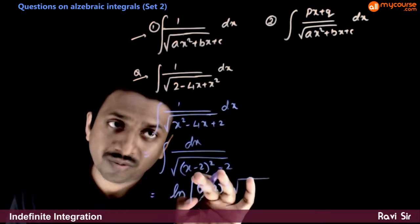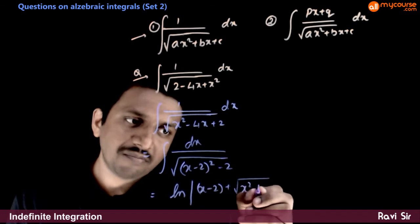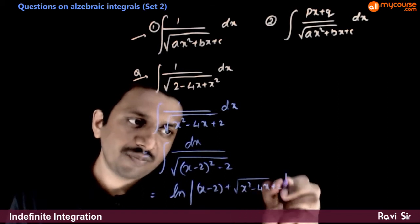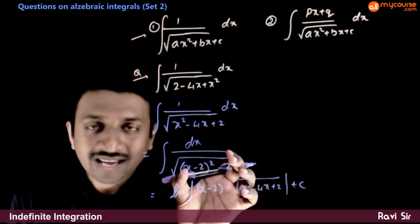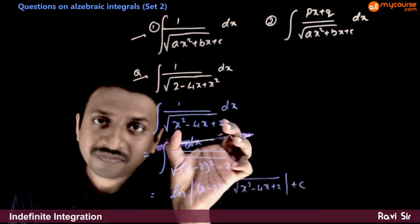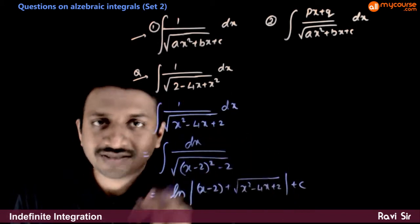So, x minus 2 whole square minus 2. This is same as x square minus 4x plus 2 plus c. So, you can write this and if you expand this, you get the same as the given expression or you can directly write this.